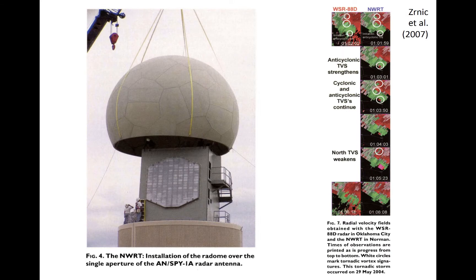An example of a phased array radar in Oklahoma is seen here with the protective radome pulled up. While this radar has a rectangular shape, radars can also have different shapes with multiple surfaces containing small phased arrays.